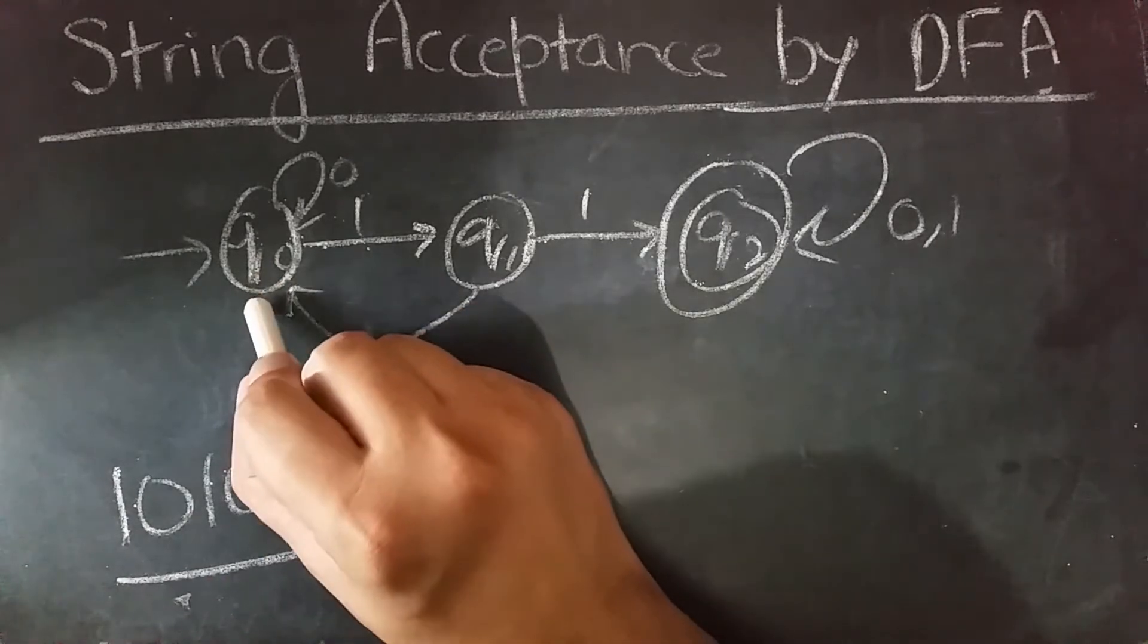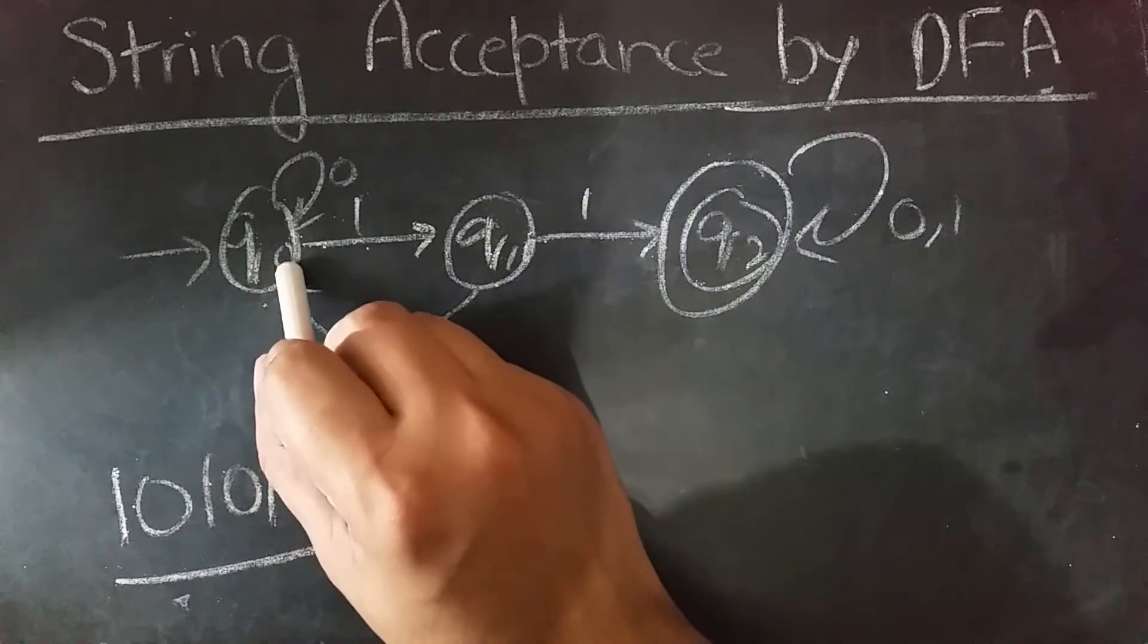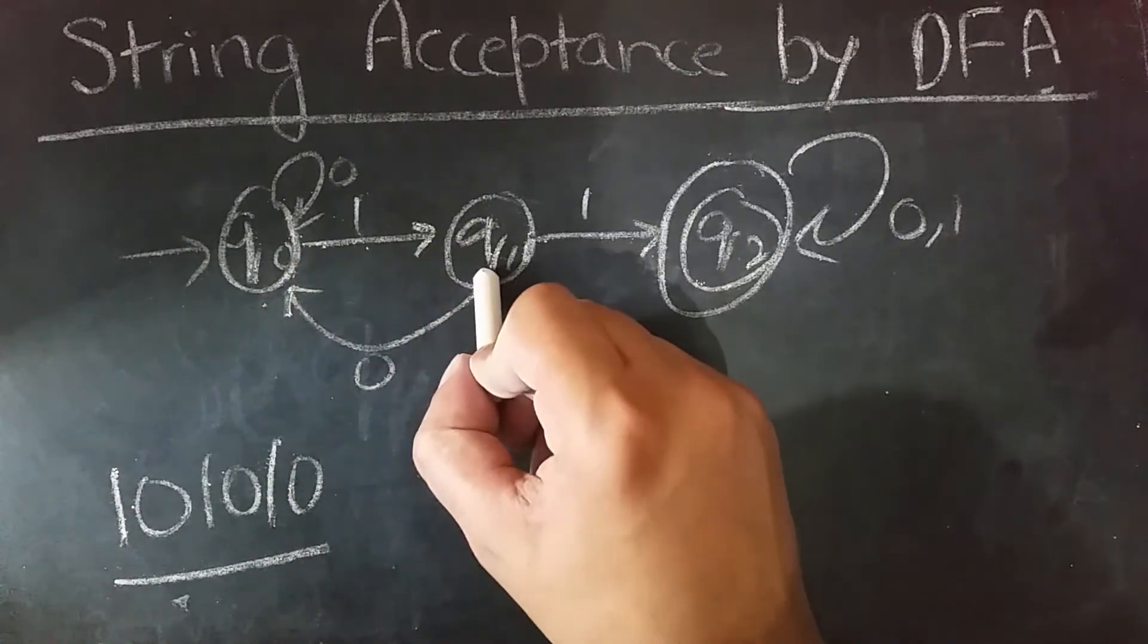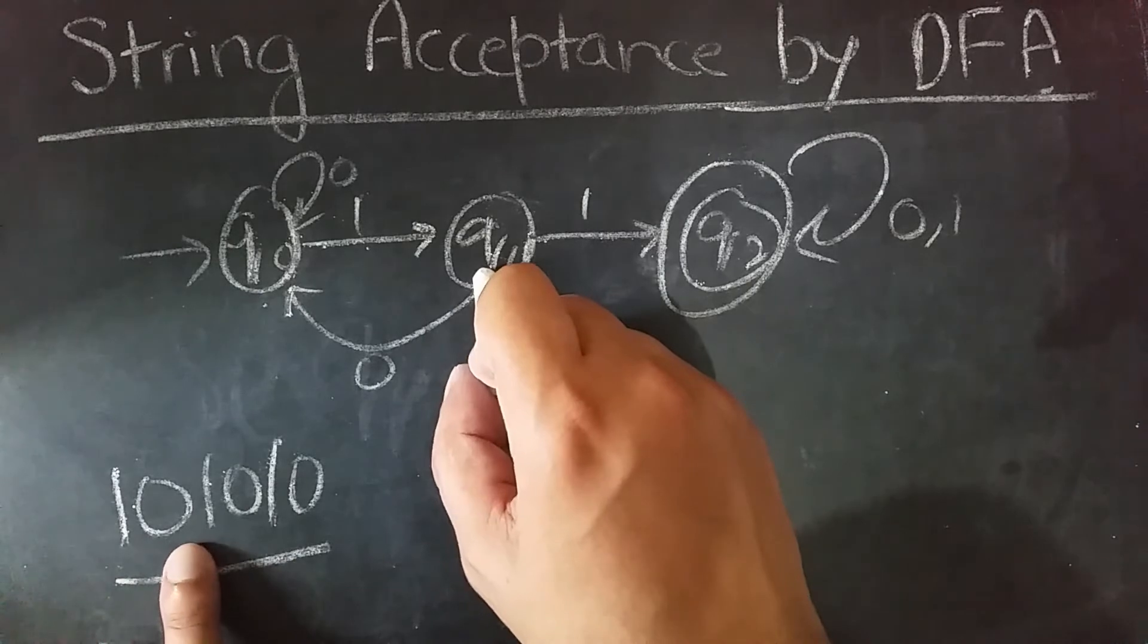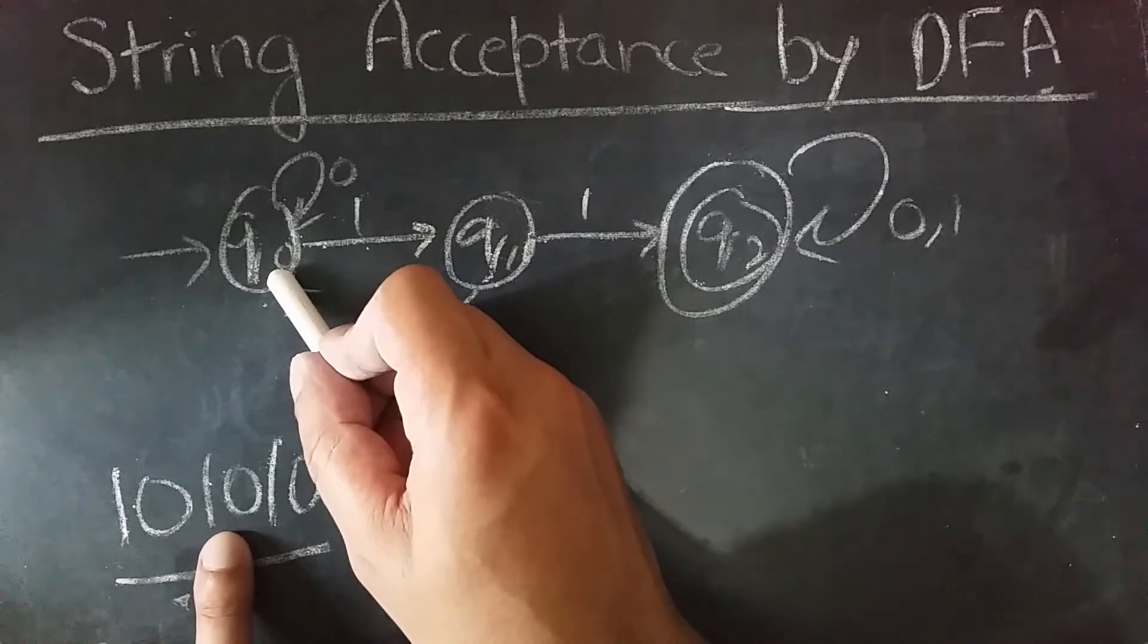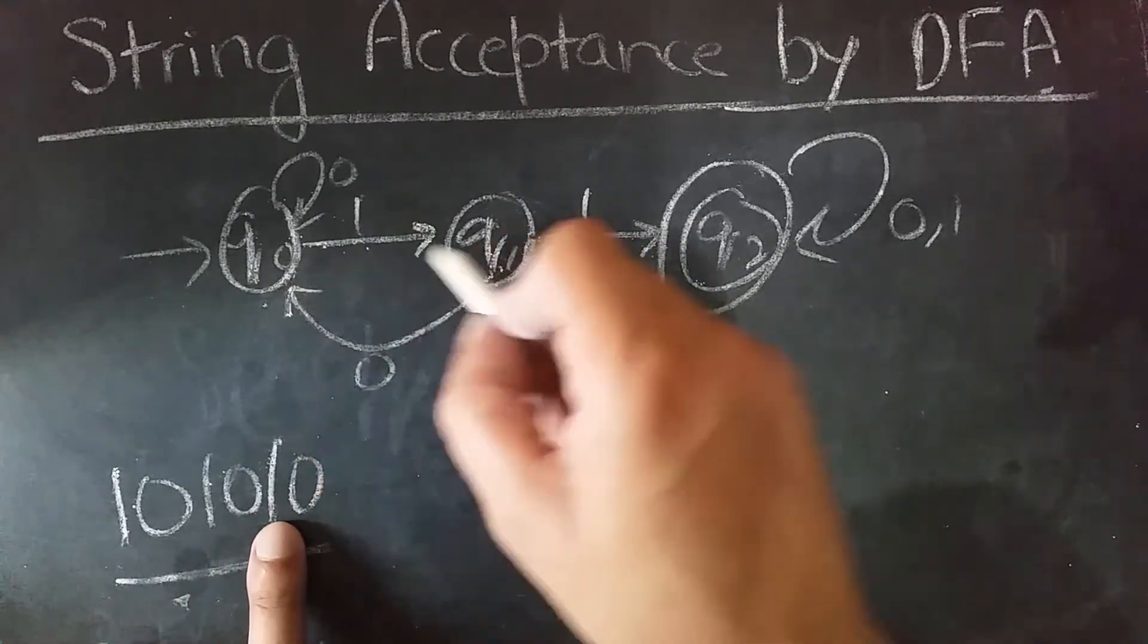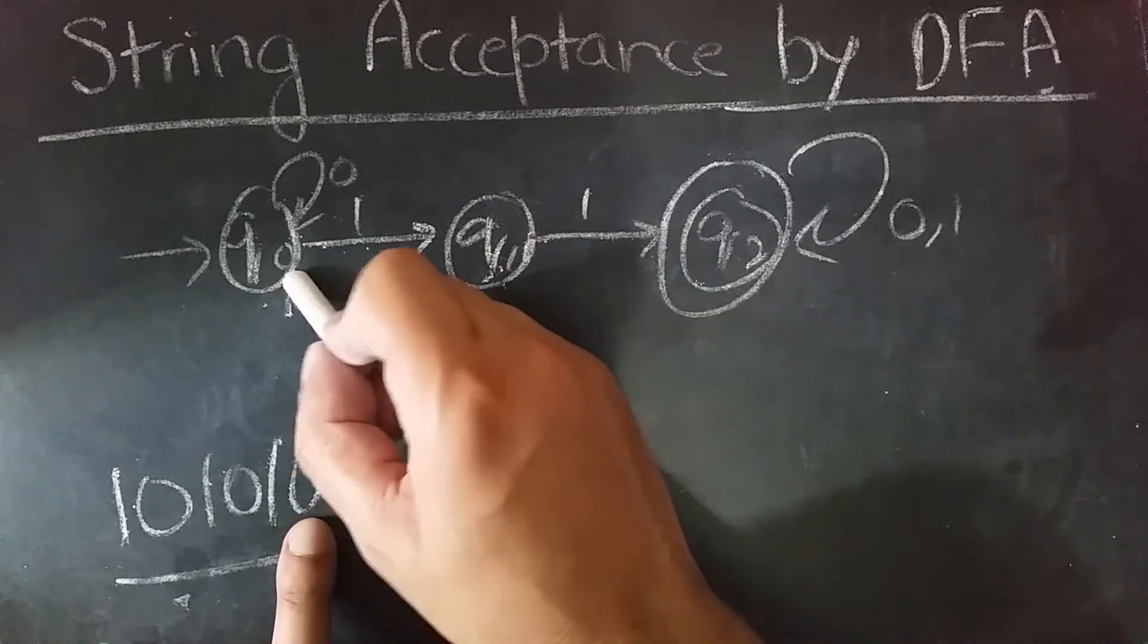First, we'll start with the initial state. If the input is 1, then we'll go to q1. Then the next input is 0, on 0 we'll go to q0. Then with 1 we'll reach q1 again, then 0 goes to q0, then 1 reaches q1, and then 0 reaches q0.